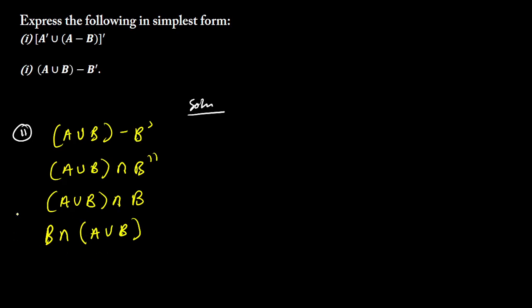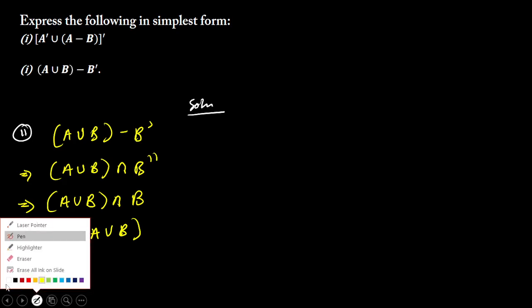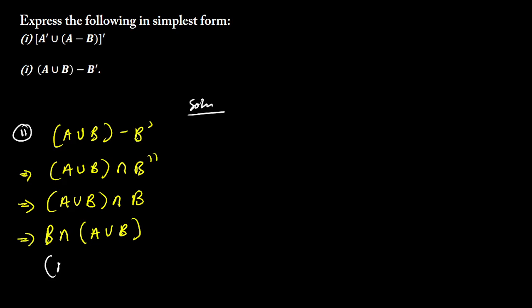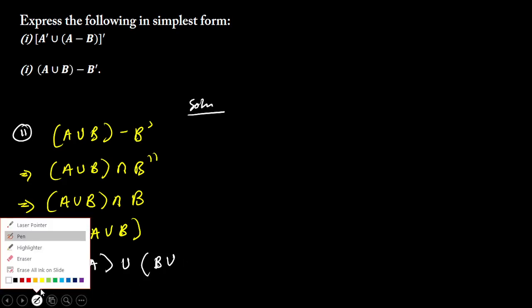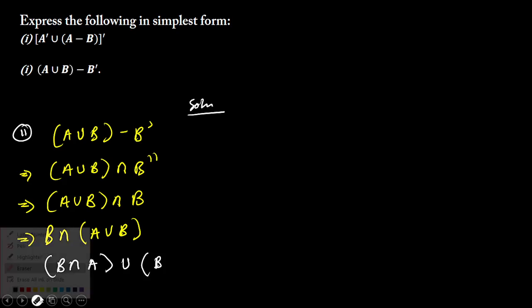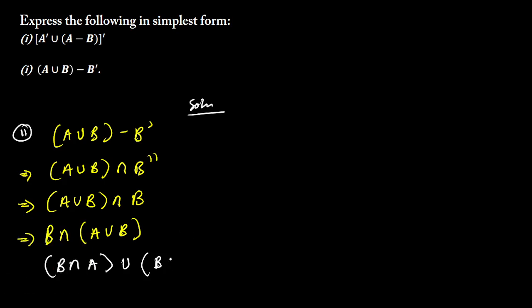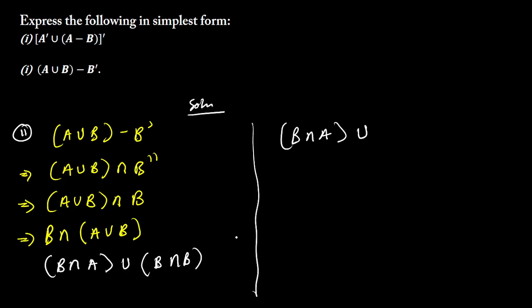After that we can use the distributive law. We can also rewrite it as B intersection open bracket A union B, since intersection is commutative. Using the distributive law this gives B intersection A, union B intersection B. Now B intersection B is simply B. So we have B intersection A, union B.